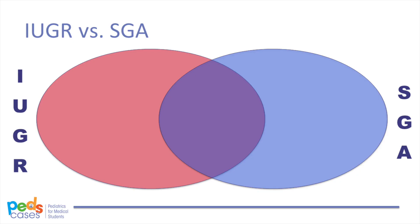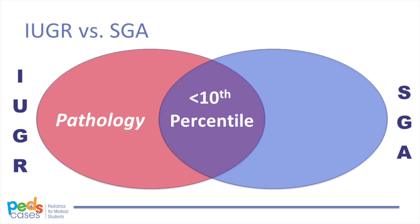What is intrauterine growth restriction and how does it differ from babies who are small for gestational age? Both IUGR and SGA babies are small, with weights that fall below the 10th percentile for all babies of the same gestational age. The difference is that IUGR babies have had their growth restricted in utero due to maternal, fetal, or placental pathology. SGA babies, on the other hand, are just born small, without any underlying known pathological maternal, fetal, or placental cause. Physicians distinguish between the two by using a variety of investigations to rule out causes of IUGR. If the baby's small size can be attributed to a pathological cause found on investigation, IUGR can be diagnosed. If no pathological cause can be found, the baby is classified as SGA. For the remainder of this podcast, we're going to focus on babies who have been diagnosed with IUGR.